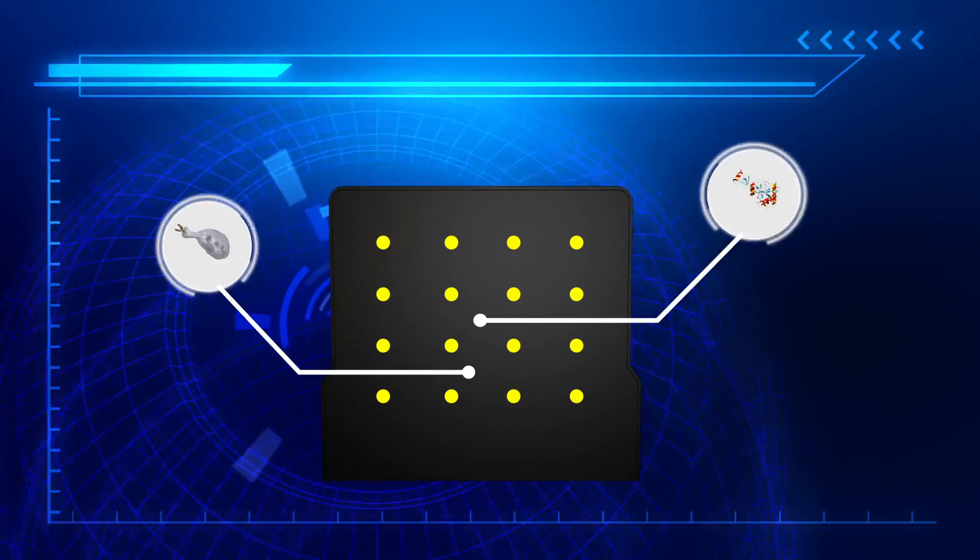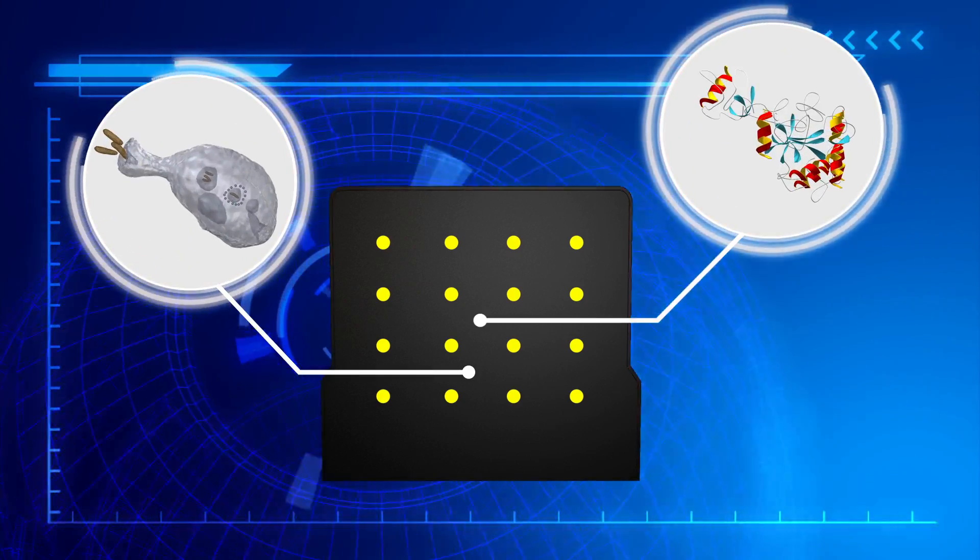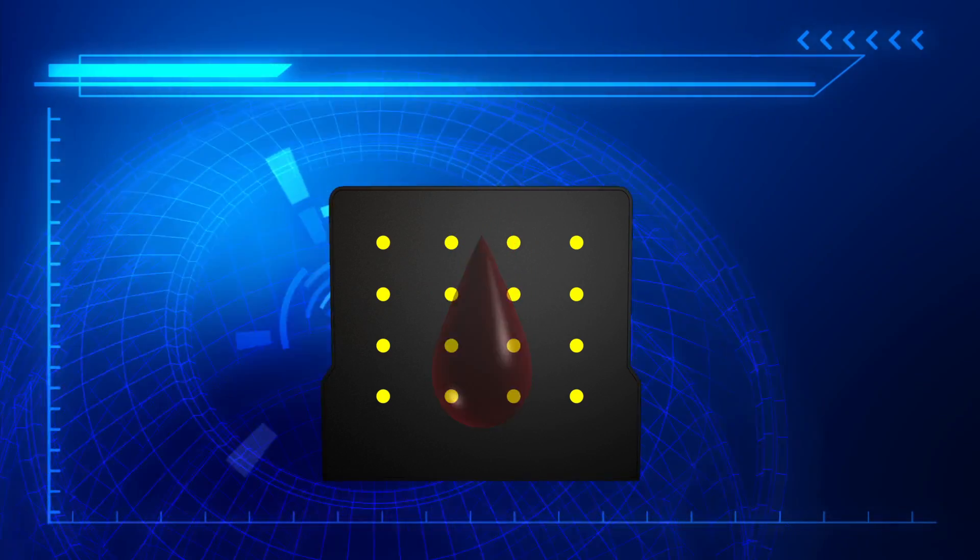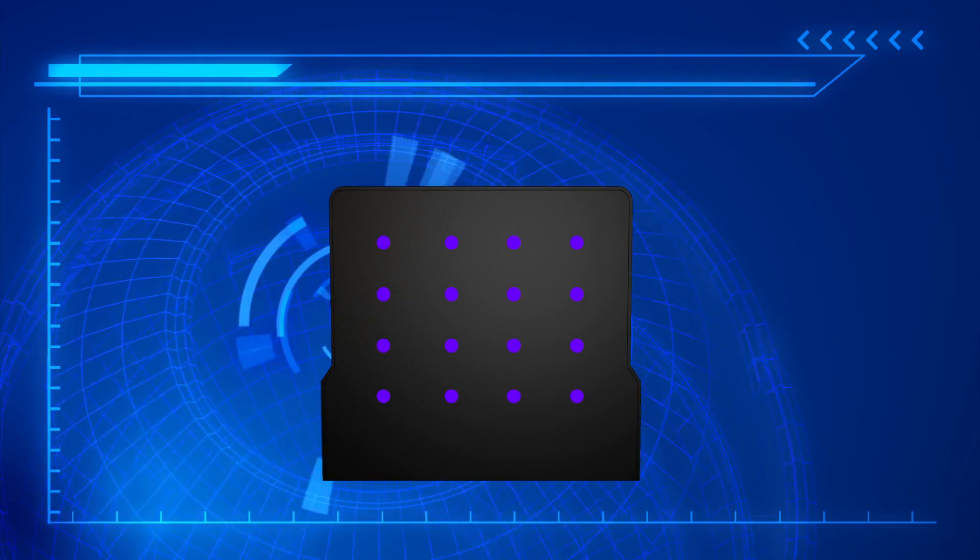The amplified sample is then added to the paper card that contains a mixture of cellular components and biological proteins. If the Zika virus is present, the card will change color.